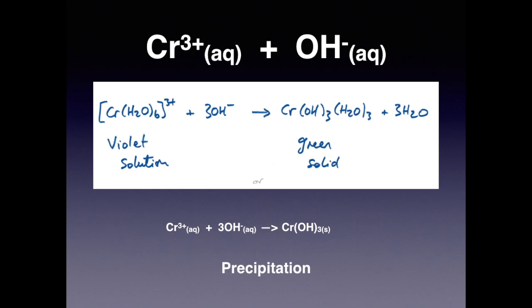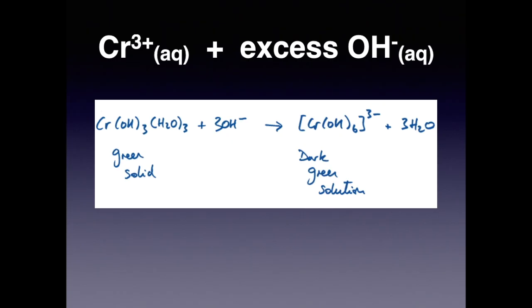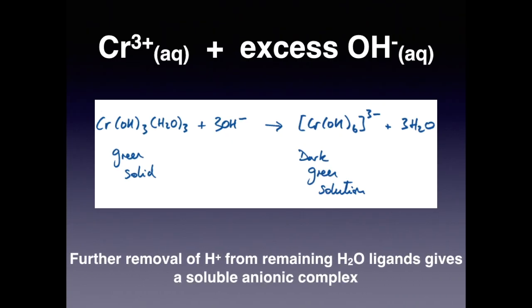Now there's an extra reaction involved with this one. We need to know what happens in excess hydroxide ions and we get this reaction here. What's happening is the hydroxide ions are removing more of the H+ ions from the remaining water ligands. We end up with six hydroxide ions on the chromium 3 plus, so we end up with a Cr(OH)6 3- ion. And because it's charged, it can dissolve in water, and so we get this solution which is dark green in colour.